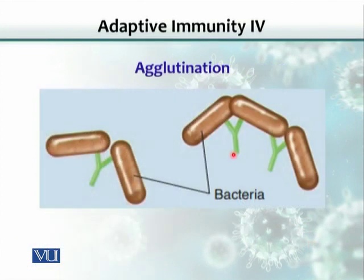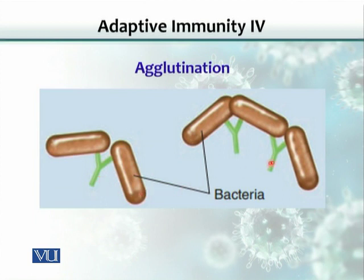Agglutination works as follows: one antibody molecule has two Fab portions that can bind to antigenic epitopes. As a result, two bacteria clump together. If you increase the number of antibodies, they would clump or bind more such cells. This clumping is called agglutination.